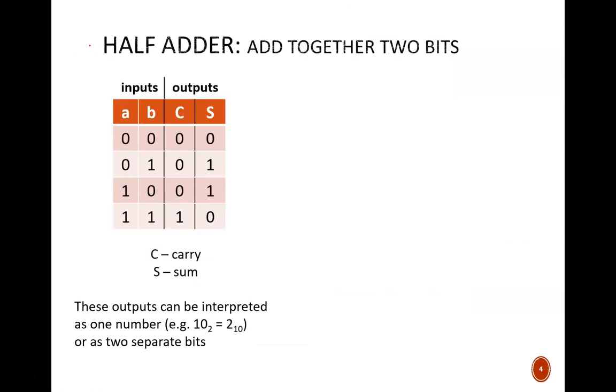Now that we have established how longhand addition should work, let's build circuits to accomplish that goal. First, we'll design a half adder which can add together two bits. This can be useful for the rightmost column of addition, where there are no carry-ins, and also as a building block for larger circuits.